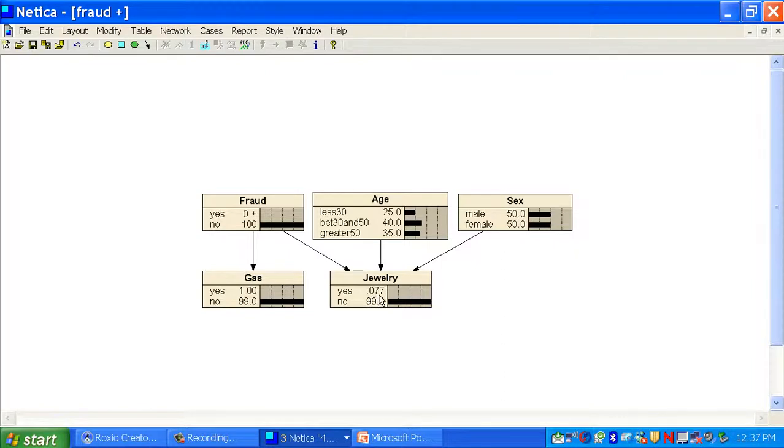Let's remove all the findings again. And if I find out that jewelry is purchased, fraud went up. If gas is also purchased, it goes up even more. If then I know that this is a young man, it goes up to almost 10% and now we might issue a warning. That's how these warning systems work.